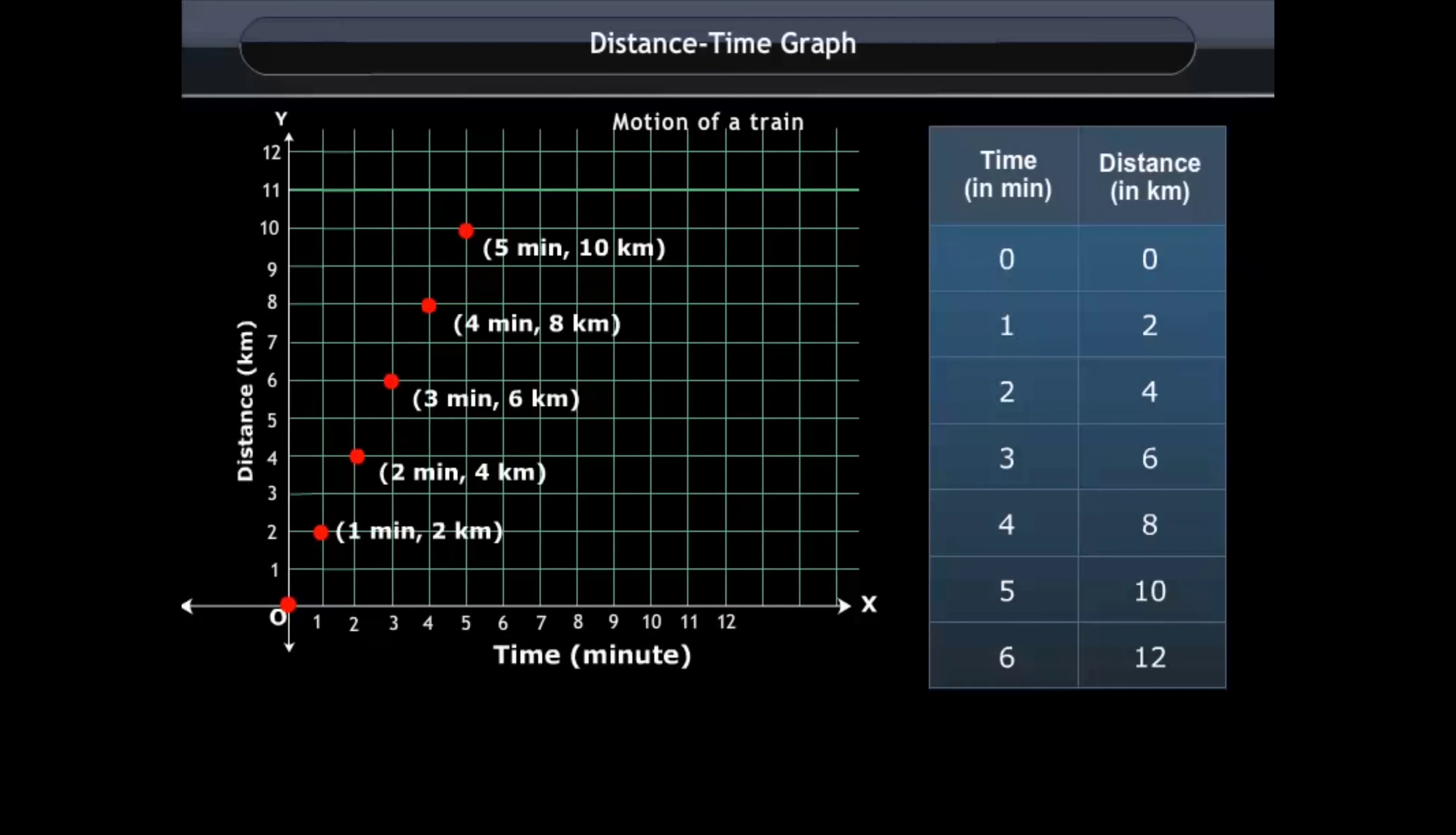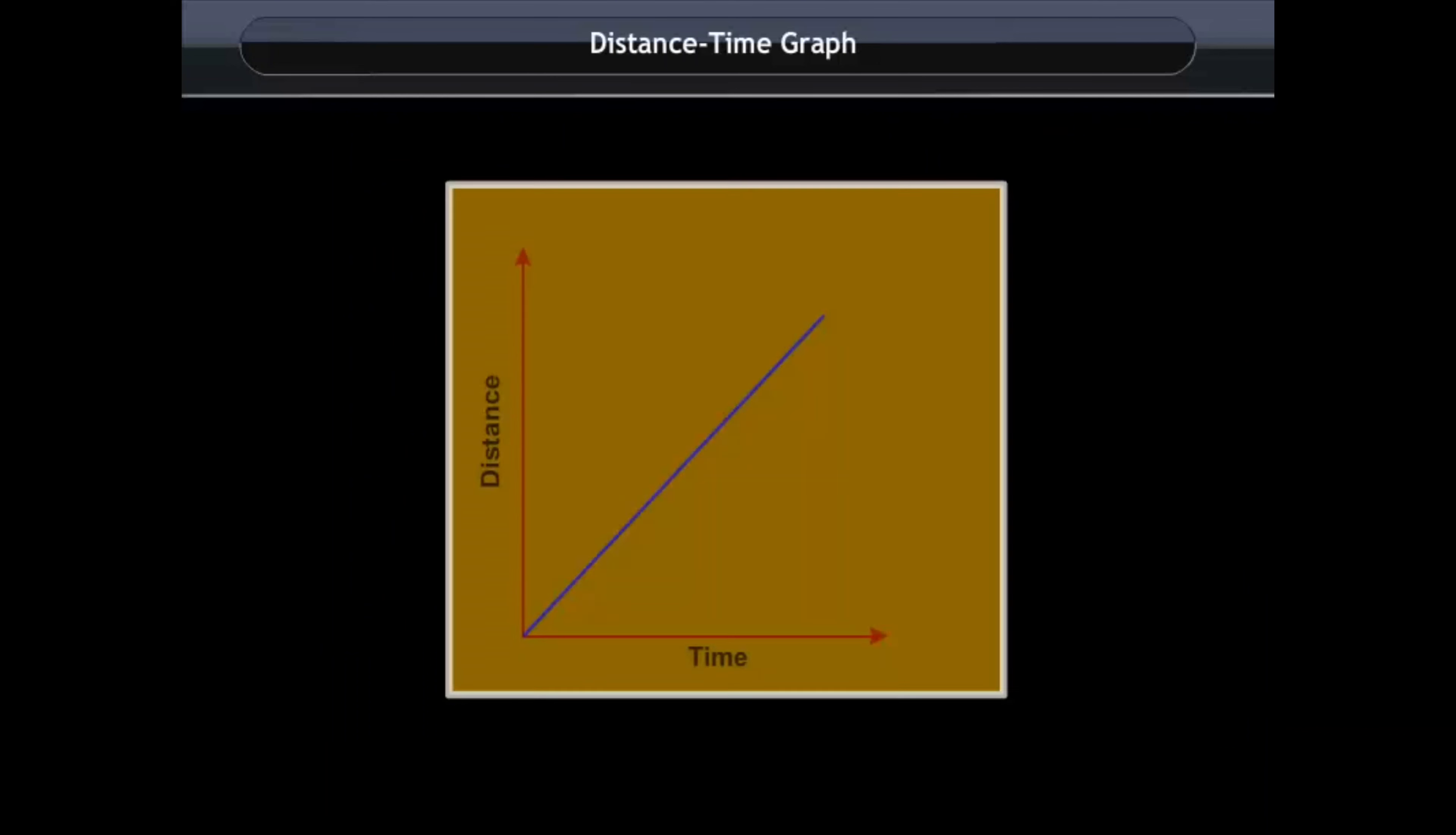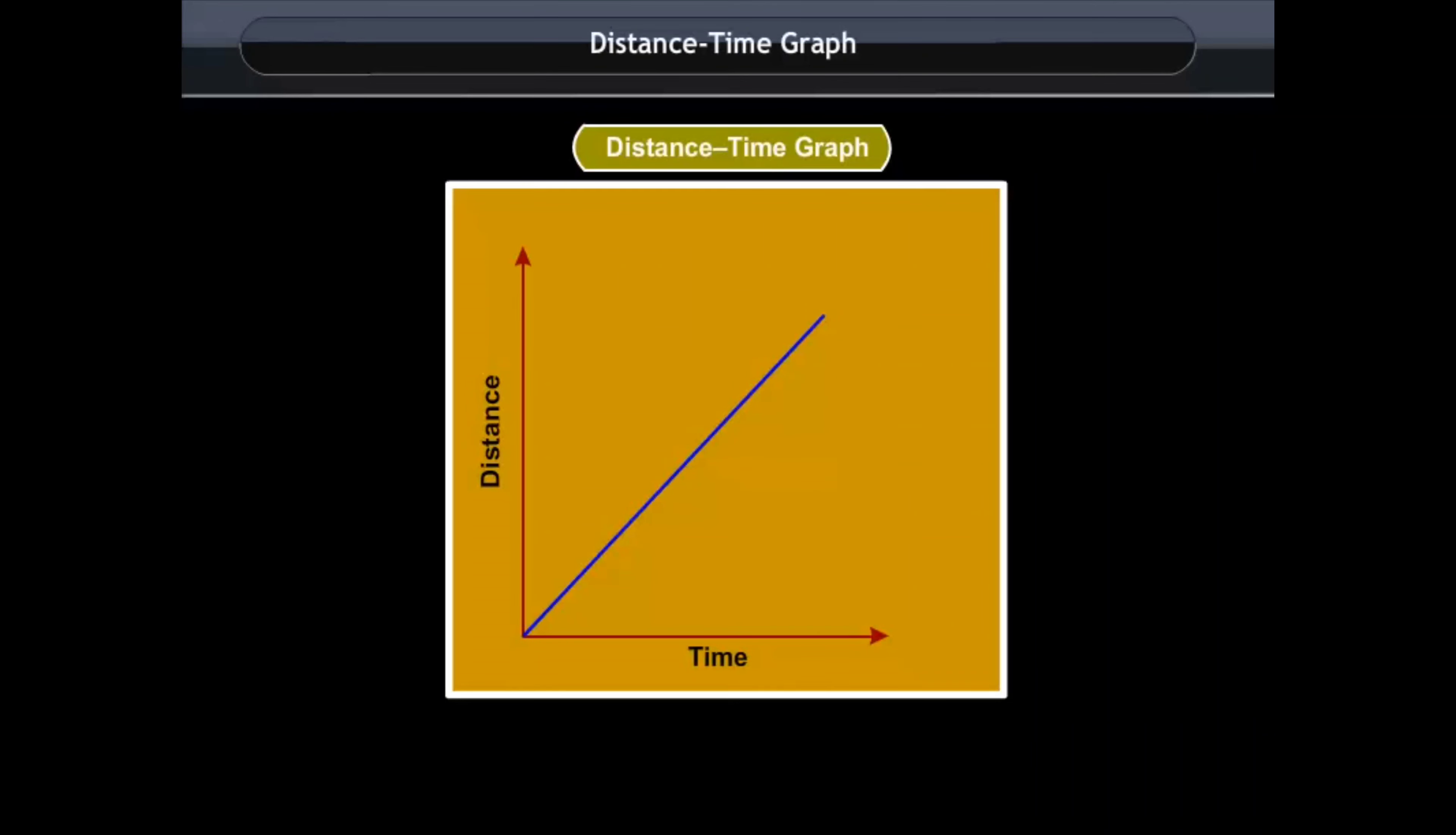Now, join these points extending the line to 0 minutes and 0 distance, i.e., point O. A distance time graph representing the movement of a body is ready.